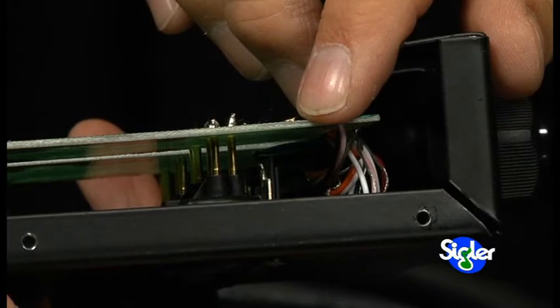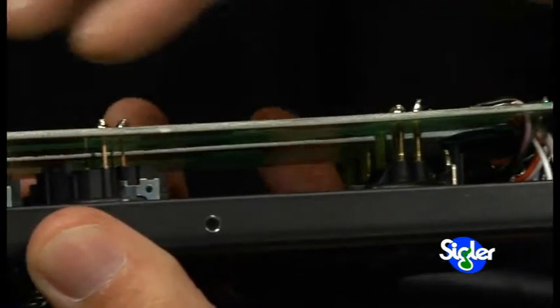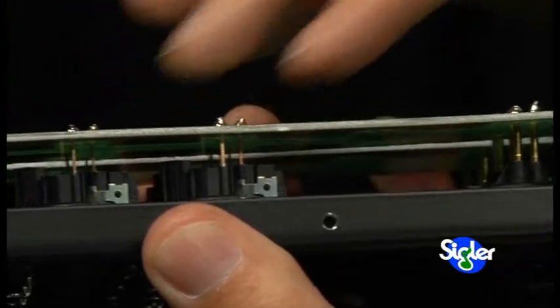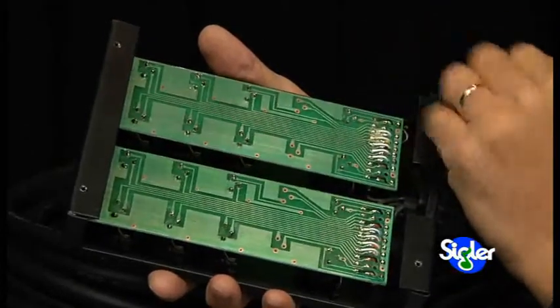So you can see solder points at each of these locations make a clean solid connection. So the snakes that have more channels of course would have more circuit boards inside.